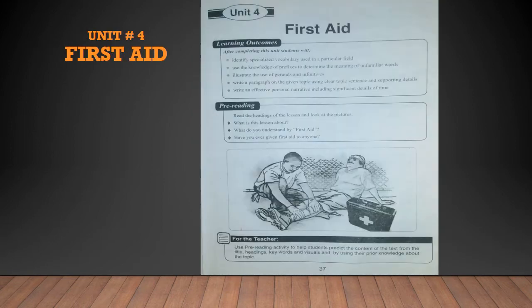Chapter number 4 is about first aid. First aid is something that we need in times of trouble; it is a medical technique that helps critical victims. In this chapter, we will learn how to deal with cuts and scrapes, how to stop the bleeding, how to clean the wound, how to apply an antibiotic, how to cover the wound, and how to change the dressing.